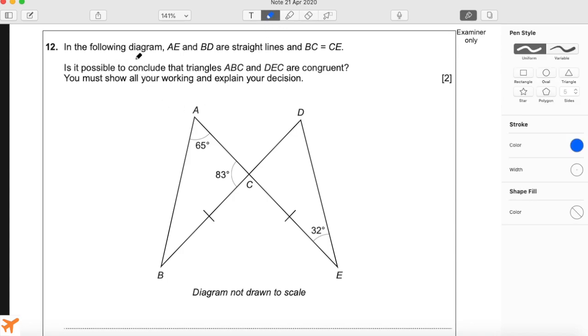Is it possible to conclude that triangles ABC and DEC are congruent? You must show all your working and explain your decision. Congruent means two shapes are the same shape and size regardless of orientation.